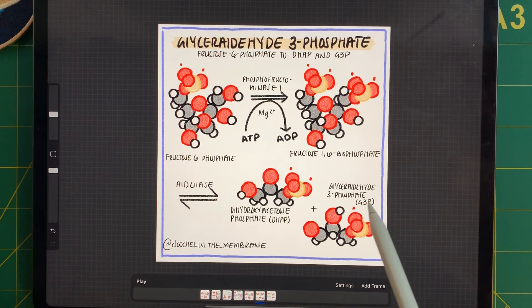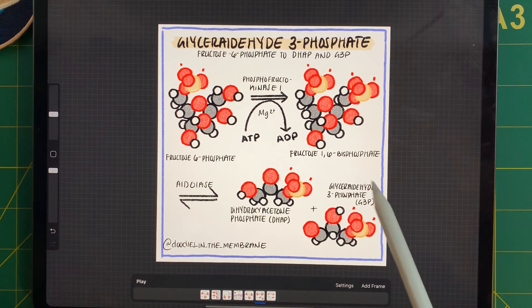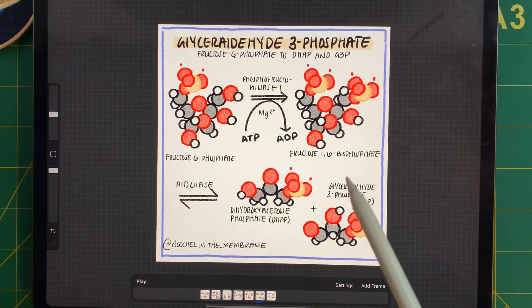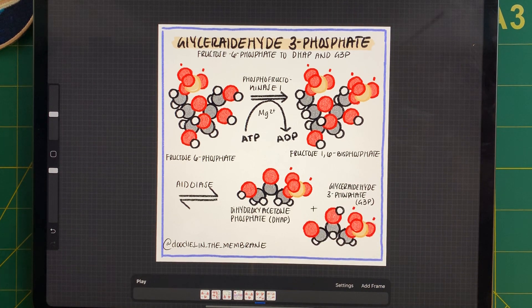Now, we're going to see glyceraldehyde 3-phosphate a lot. G3P is a really common intermediate in biological pathways, but we have DHAP. So let's kind of look at the next step of glycolysis.